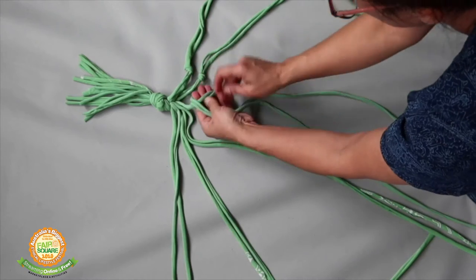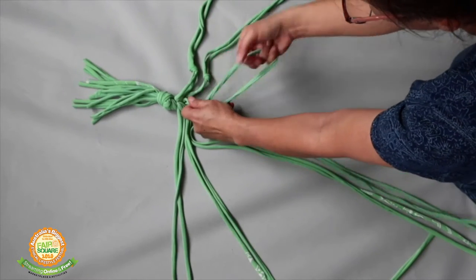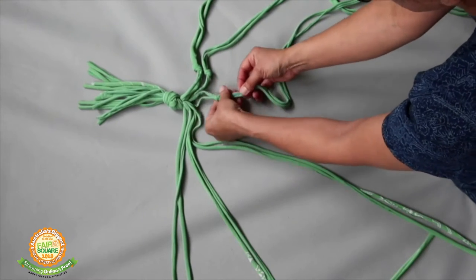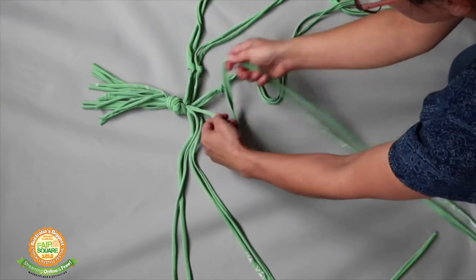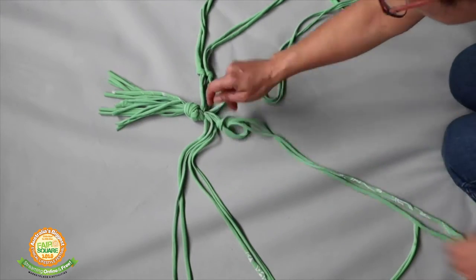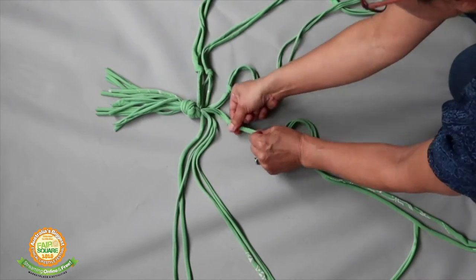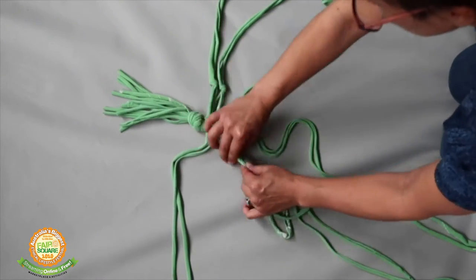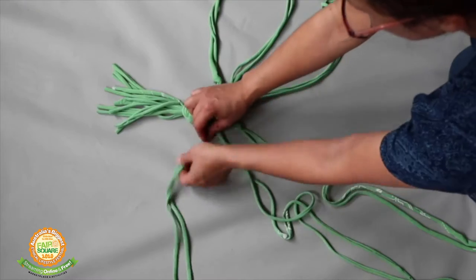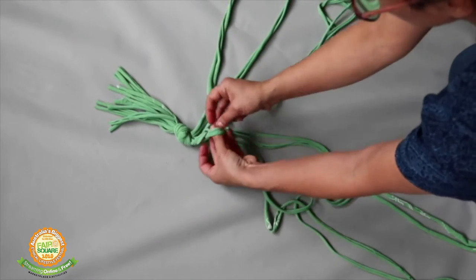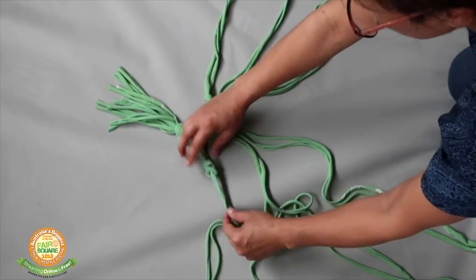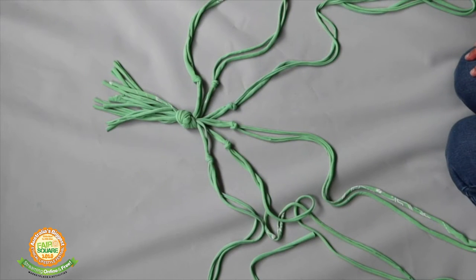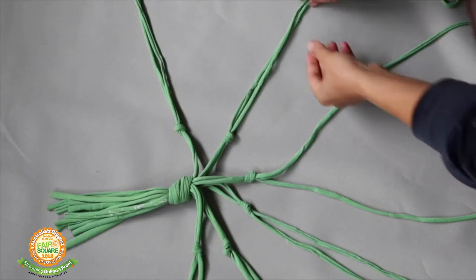I have them about seven to eight centimeters down from the original knot. So we go around the fan shape and tie each of the pairs down in a knot seven centimeters from the original big knot. So that's the very first line of weaving of knots for the hanging basket.